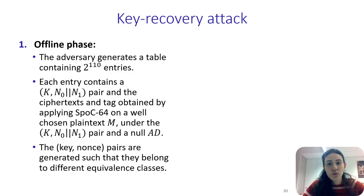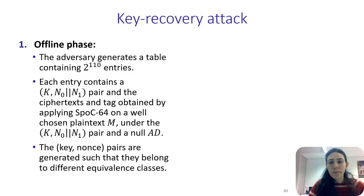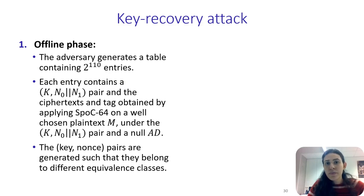Our key recovery attack consists of two phases: an offline and an online phase. For the offline phase, the adversary first chooses a commonly used message M — for example, in many scenarios, certain blocks occur often as the beginning of a message, such as 'Dear' or 'Hello' in an email. Then 2^110 key-nonce pairs are generated such that they give different equivalence classes. Finally, a table with 2^110 entries is generated, and in each entry are stored the key-nonce pair and the corresponding ciphertext of the chosen message M encrypted under that key-nonce pair and the associated data.